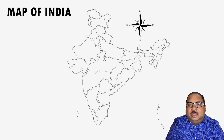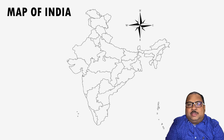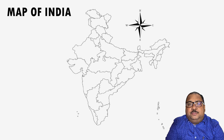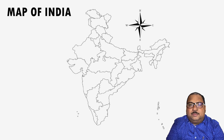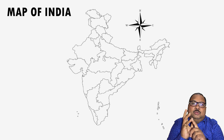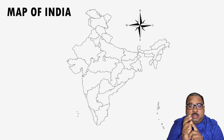Ganga is the longest river flowing in India. Its total length is 2525 km. It passes through two different countries and five different states of India. These five different states are Uttarakhand, Uttar Pradesh, Bihar, Jharkhand and West Bengal.